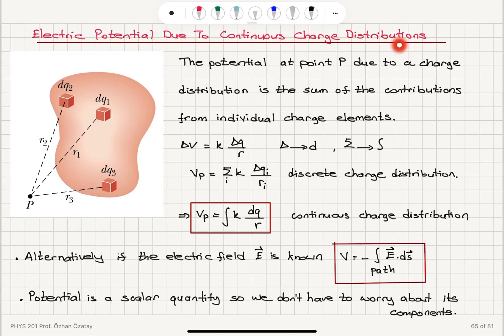Electric potential due to continuous charge distributions. Now we're going to generalize what we know for point charges to continuous charge distributions.